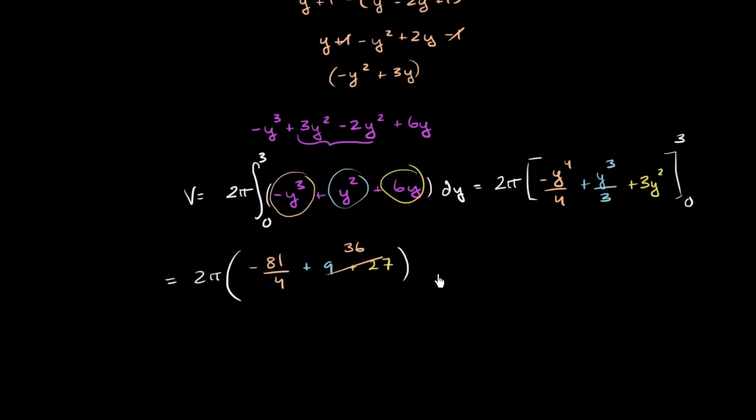So all of this business is going to be equal to 2 pi times, our common denominator can be 4, times something over 4. We have negative 81 over 4. And then 36 times 4 is 144. So it's plus 144.